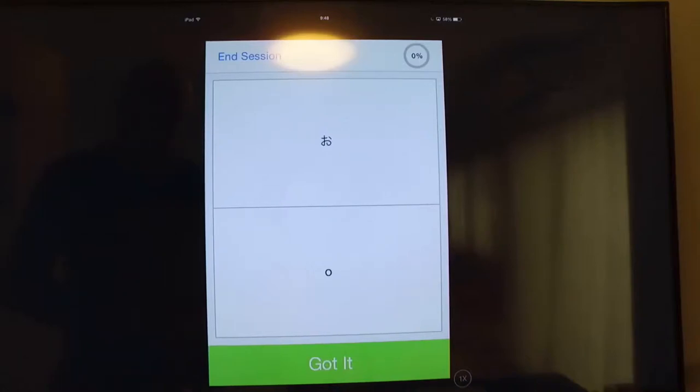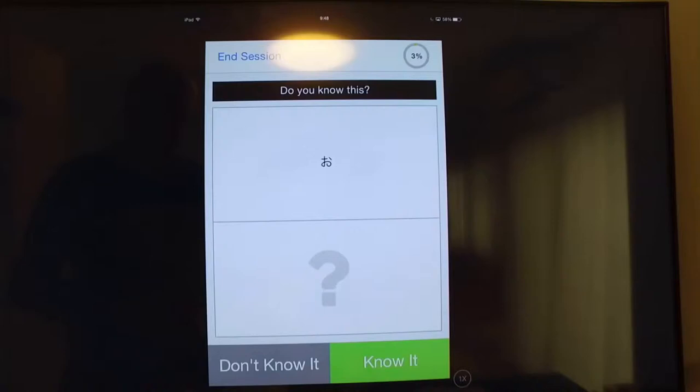So this is 'o' as in octopus. O. And then you press I got it. All right, this is 'ka' as in camera. Ka, camera, kangaroo. Ka. So it's going to ask you 'o', do you know it? I know it.